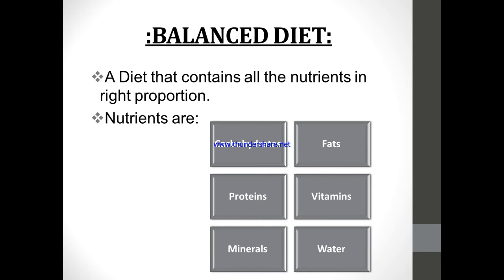If any nutrient is in excess or if there is a deficiency of any nutrient because we are not taking a balanced diet, then we are going to have a problem. As studied earlier, overnutrition means getting any nutrient in excess amount, and undernutrition means having a deficiency of any nutrient. Such a diet is not balanced or healthy. We should have all nutrients included in all meals of the day.